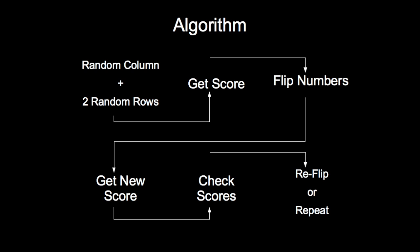At that point, it flips the selected numbers, and then finds the new score of the puzzle. That score is compared to the old score in a way that we'll discuss in a moment, and then the numbers are either flipped back or the process is repeated.